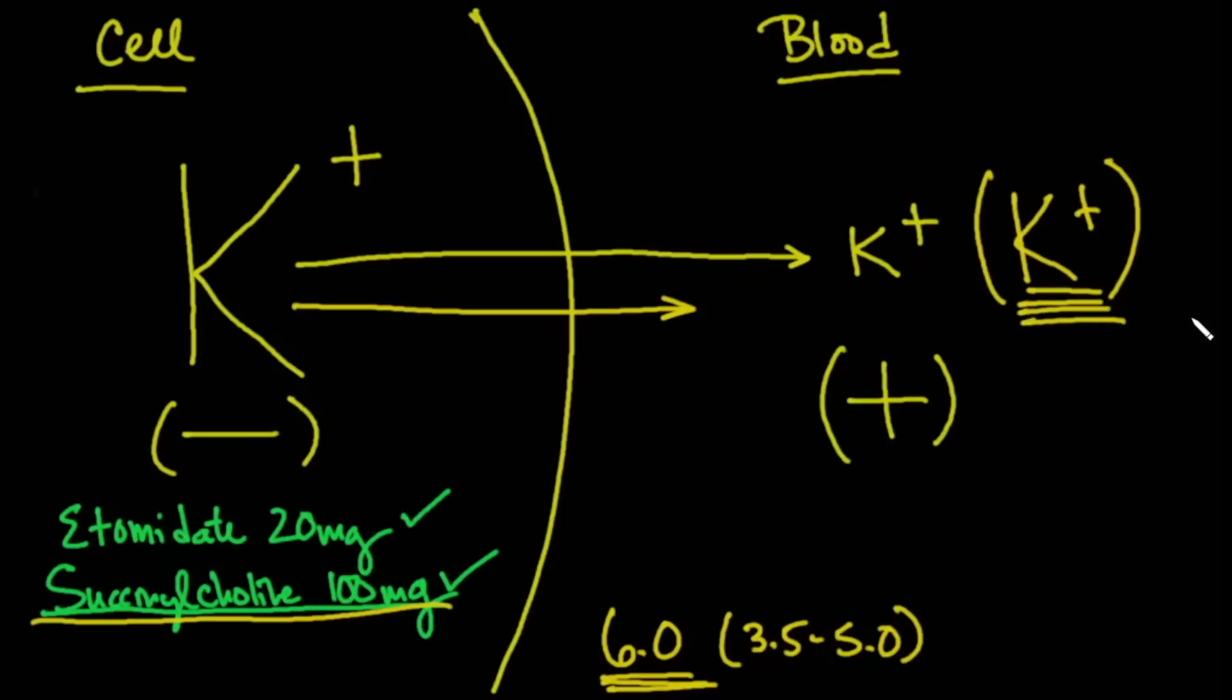So high potassium causes this diffusion of potassium outside the cells to go at a slower rate because there isn't a bigger difference. The result of that is that this positive and negative charge is not as great. There is a smaller positive charge and a smaller negative charge when you have significant hyperkalemia.